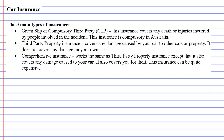The second type is third-party property insurance. This covers any damage caused by your car to other cars or property, but it does not cover any damage to your own car. This is really handy to have because if you hit a really expensive fancy car, this insurance will cover you — you don't want to hit a car worth half a million dollars and have to pay for that.